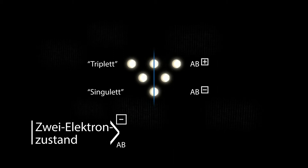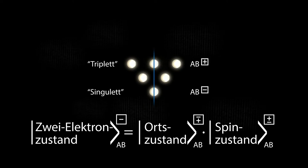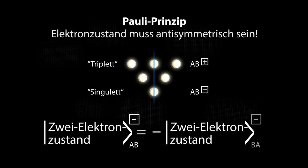The entire two-electron state consists of a position and a spin state. The symmetrical spin triplet joins with the anti-symmetric position and the anti-symmetric spin singlet joins with the symmetrical position. This is the Pauli exclusion principle. The state of two electrons, A and B, must be anti-symmetric.